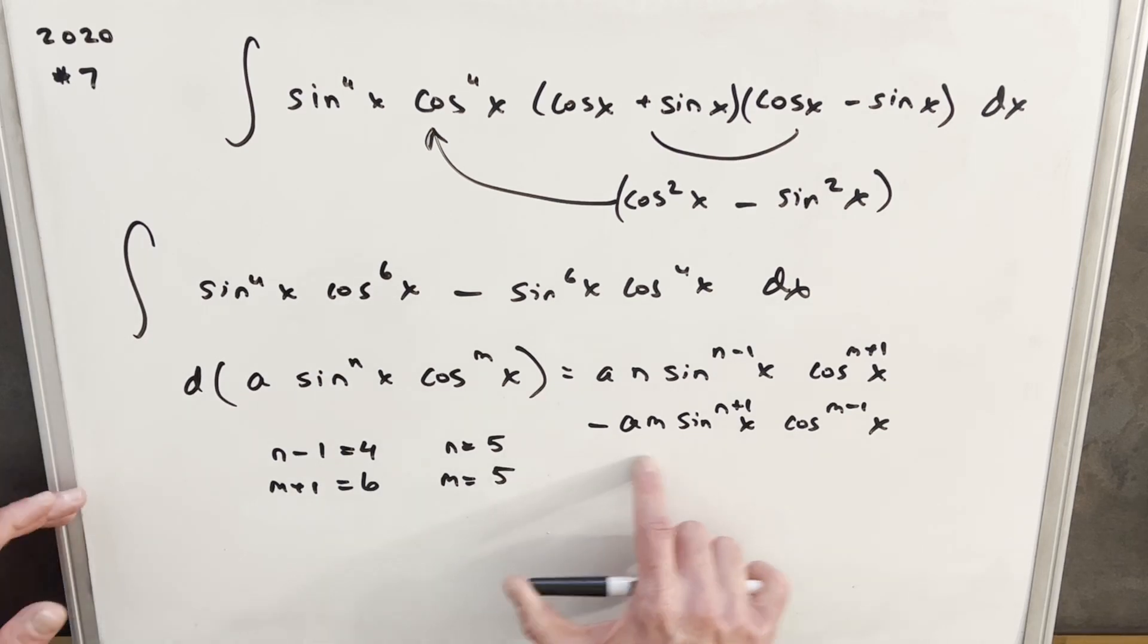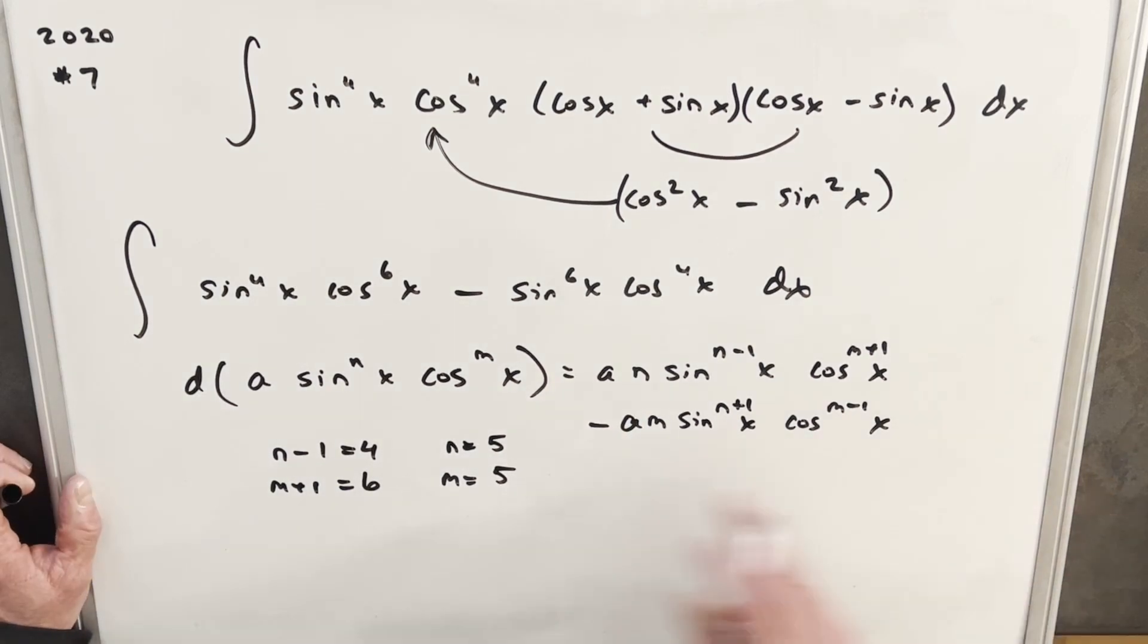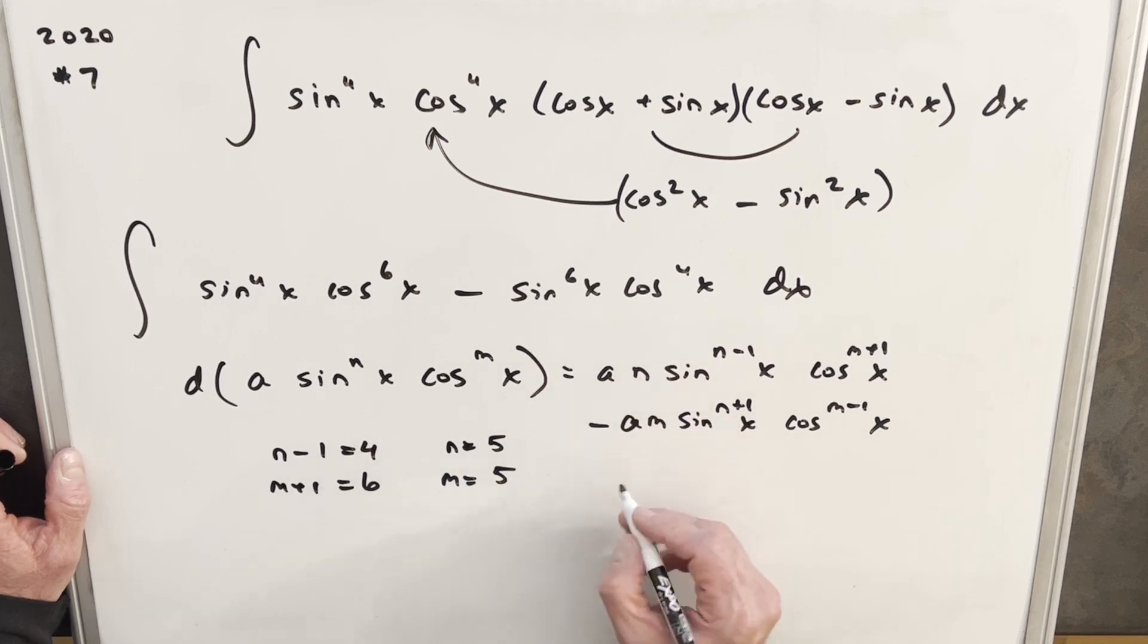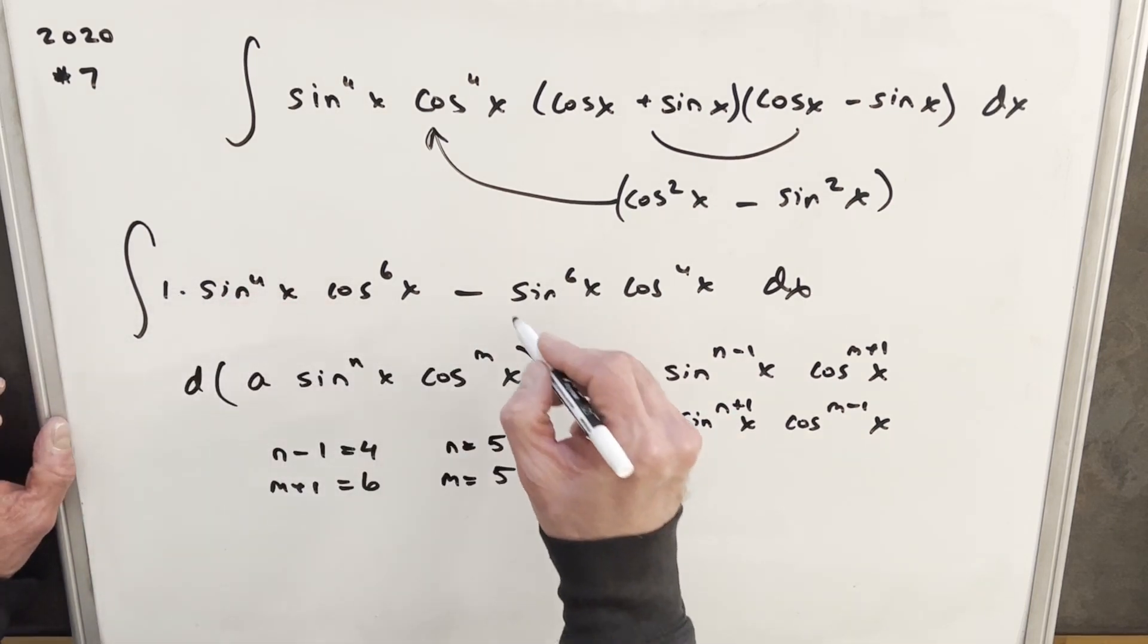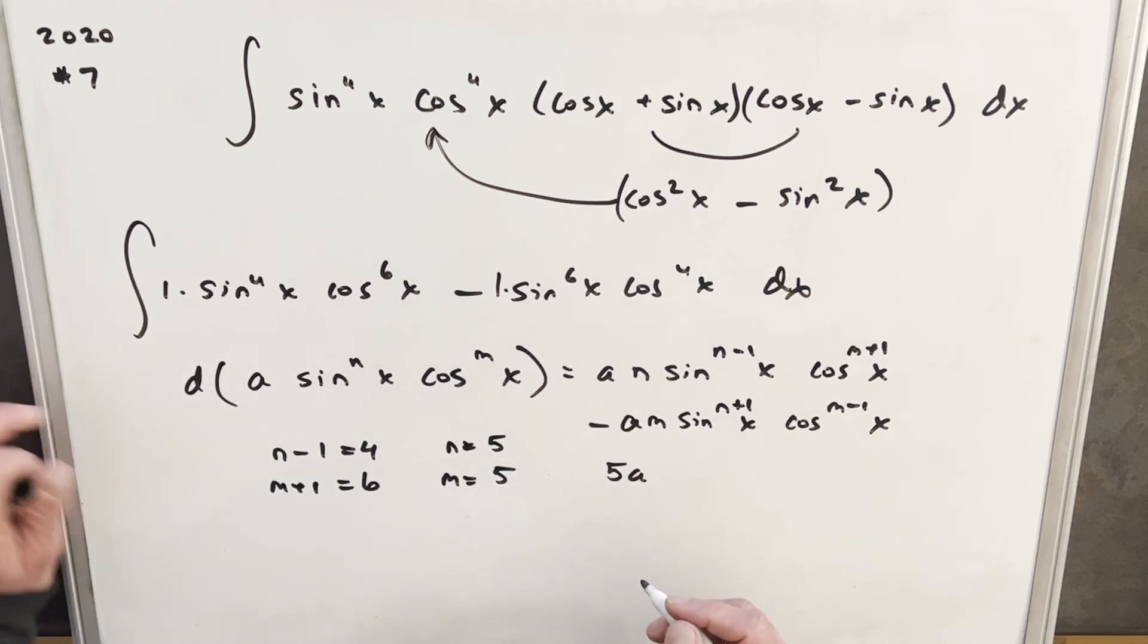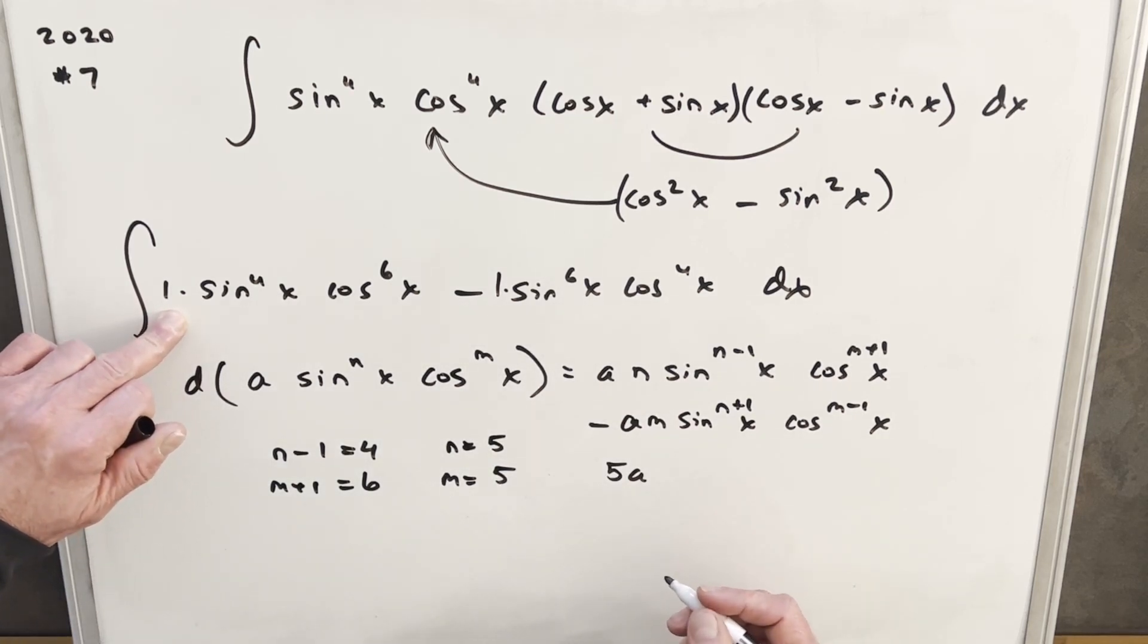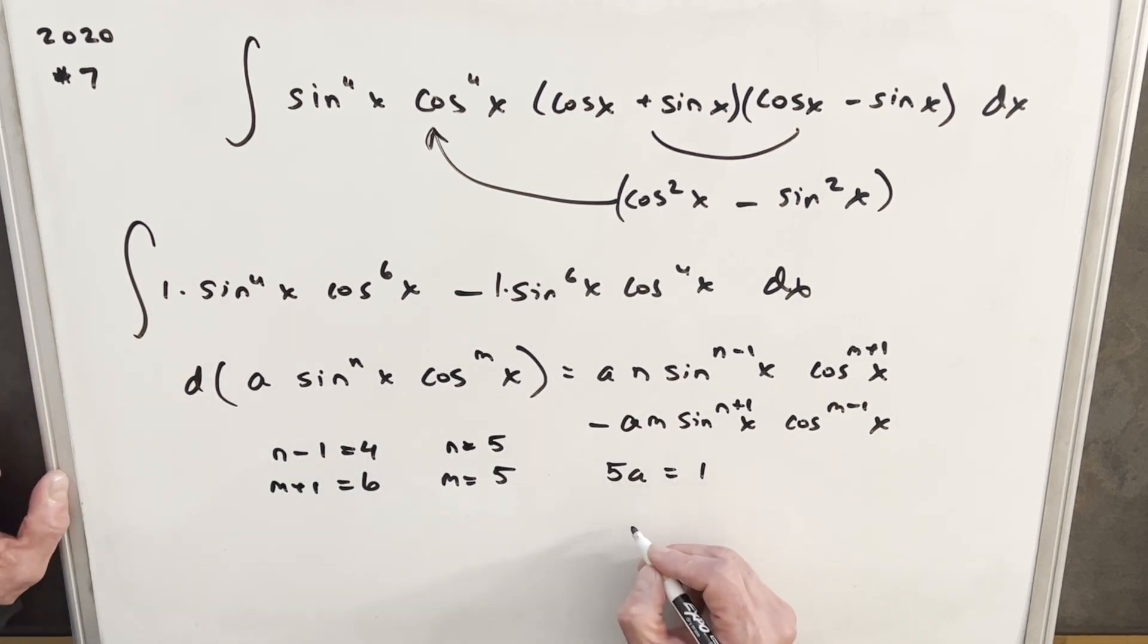And then you can just double check the other equation and make sure it all works. 5 and 5 are going to work fine for m and n. And then the only question now is what is our a value? Well, we can look at, well, now that we know that n is 5, we can look at an as 5a. And the coefficient here is 1. Coefficient here is 1. We'll just focus on this one, though. So we're saying 5a equals 1. Well, then our a equals 1 over 5.